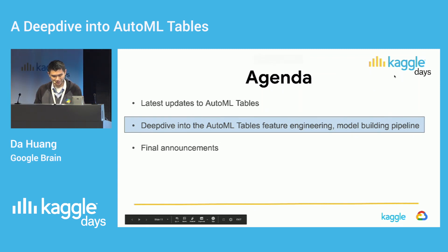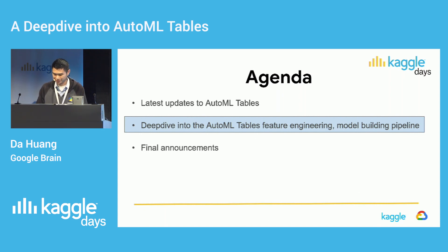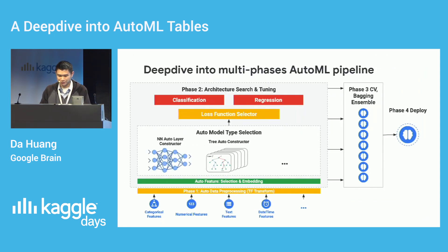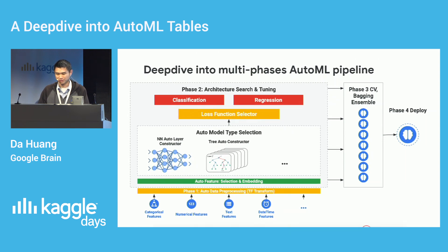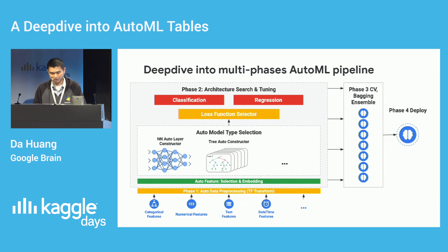In the following part, I will be deep diving into the AutoML Tables feature engineering and model building pipeline. Before building this pipeline, we did a lot of use case studies, learning how a general data scientist approaches solving their own tabular data problems. We consolidated all those common patterns and built up this multi-phase AutoML pipeline.